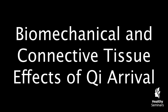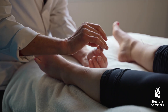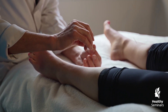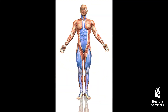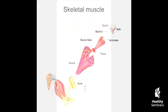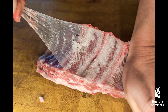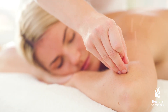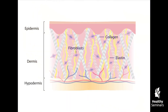Now let's turn to the biomechanical mechanisms of Qi arrival. One of the most fascinating findings in acupuncture research is how needle insertion and manipulation affect connective tissue and fascia. The human body is composed of a vast network of fascia — a continuous web of connective tissue surrounding muscles, organs, and nerves. When an acupuncture needle is inserted and rotated, it mechanically interacts with the fascia, causing fibroblasts, the primary cells of connective tissue, to stretch and realign.